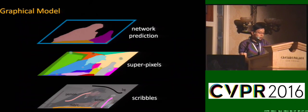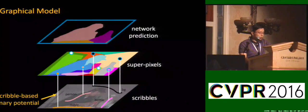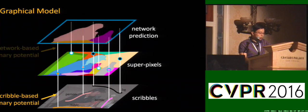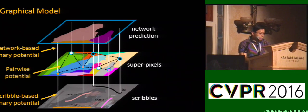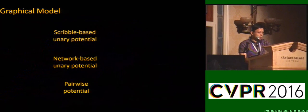Each vertex in the graph represents a superpixel. We design a scribble-based unary potential to impose constraints from user annotation. The network unary potential respects prediction from the fully convolutional network module, modeling semantic content to help label propagation. Adjacent superpixels in the graph are connected by pairwise potential to model pairwise similarity. I will briefly explain these three potentials.